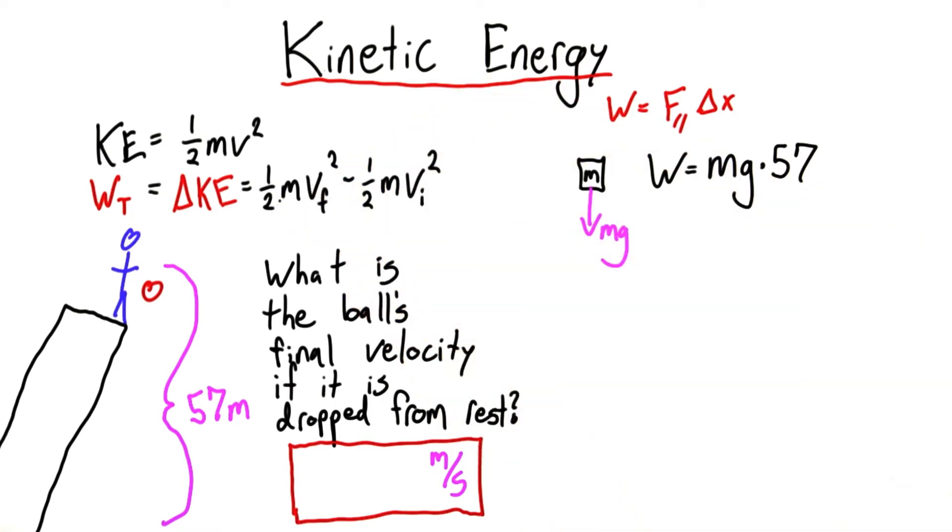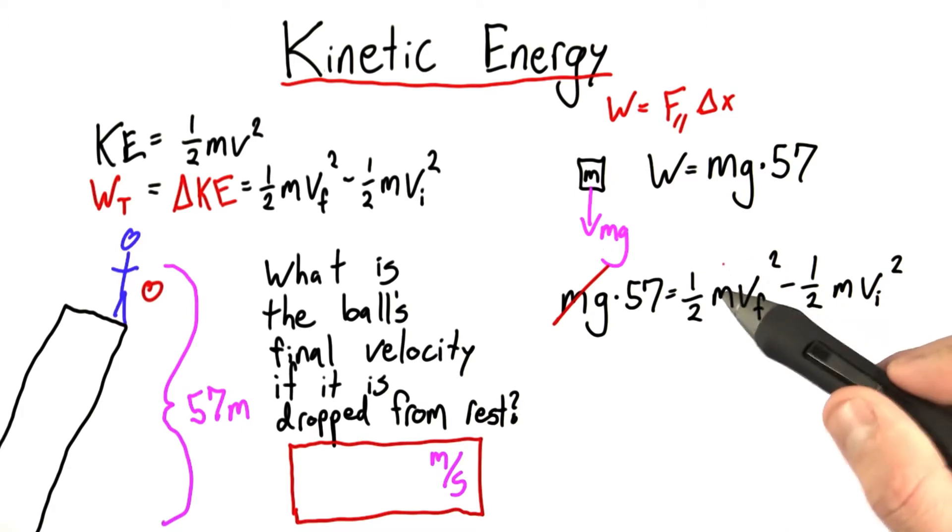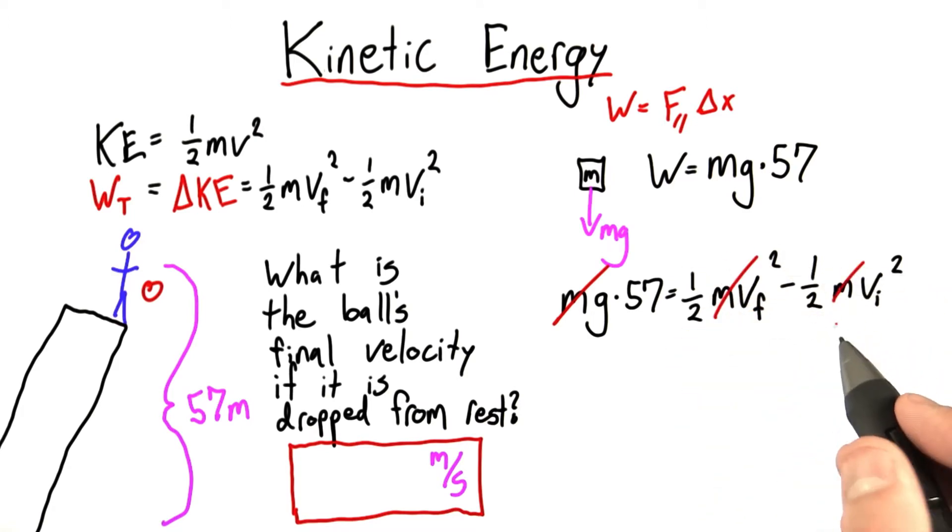And I know that's also equal to the change in kinetic energy. Notice that an amazing but necessary thing happens. The mass cancels out. I can also multiply both sides by 2.